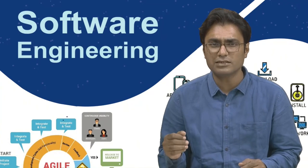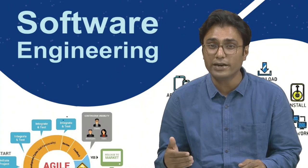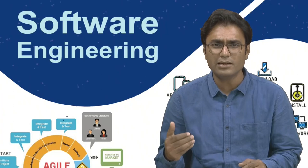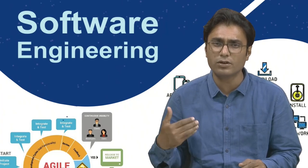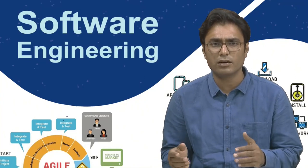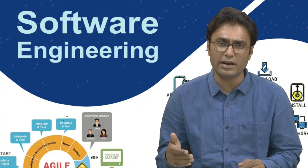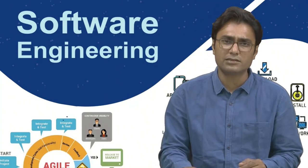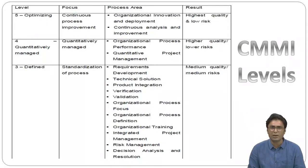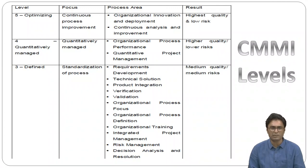Each maturity level provides a necessary foundation for effective implementation of processes at the next level. Higher-level processes have less chance of success without the discipline provided by lower levels. CMMI defines each process area in terms of specific goals and specific practices required to achieve these goals. To achieve a maturity level, the specific goals and associated practices must be achieved. On the next slide you can see a table of CMMI levels with their process areas and results.